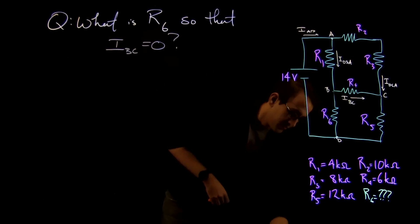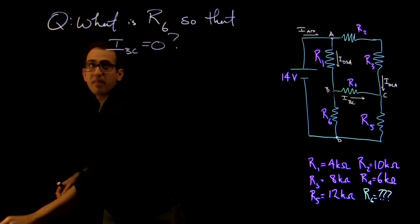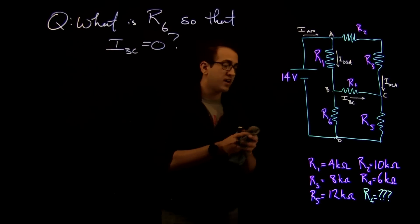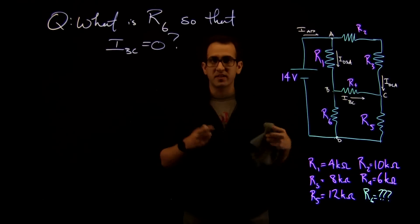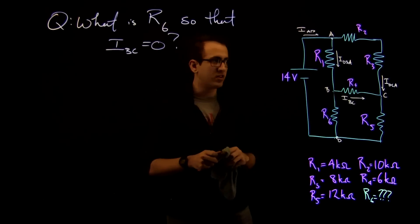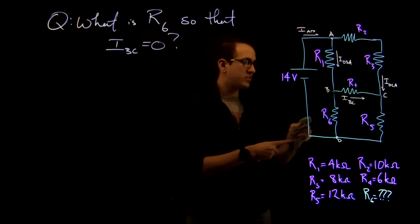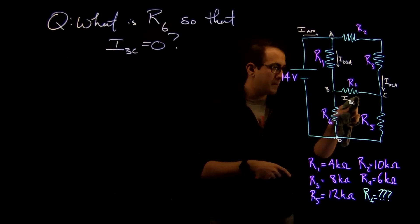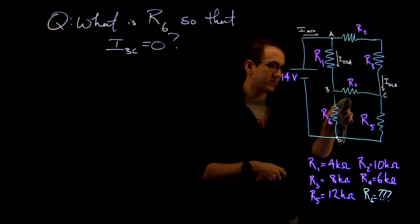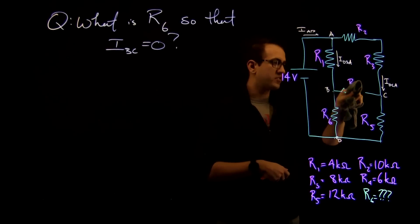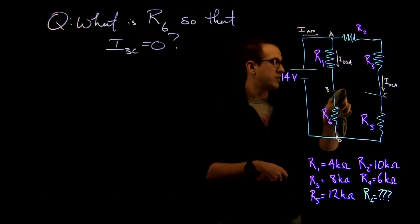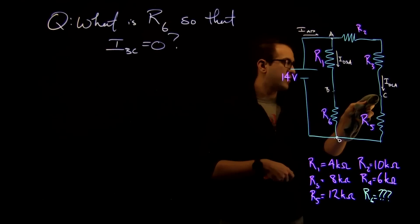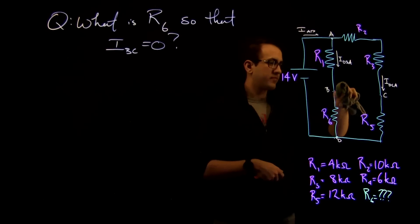So the first thing we're going to do is we're going to notice that if IBC is zero, then the circuit element R4 doesn't contribute. It doesn't affect our overall behavior. So what we can do is we can simplify that out by erasing it, which will make our circuit that little bit easier to tackle.